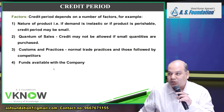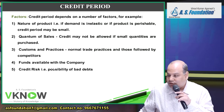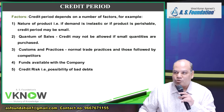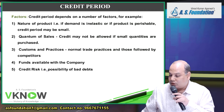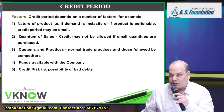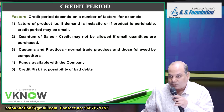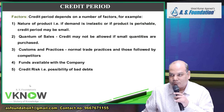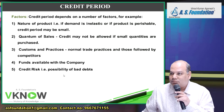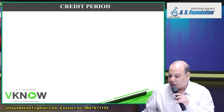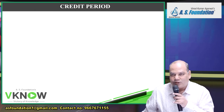Funds available with the company also affect credit policy. A cash-rich company can give more credit, while a company with a shortage of money will have a lower credit period. Another factor is the possibility of bad debt — if the possibility of bad debt is high, give no credit or a low credit period. If the possibility of bad debt is very low, you can extend the credit period.